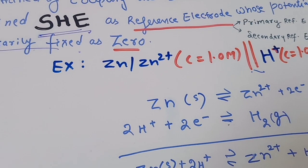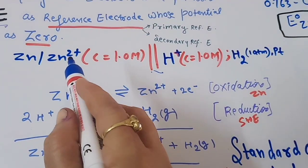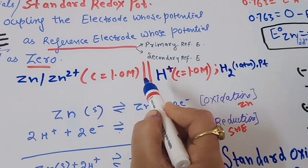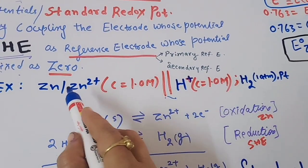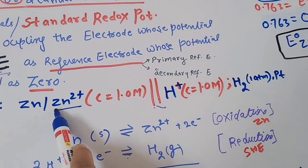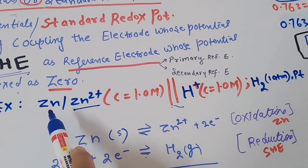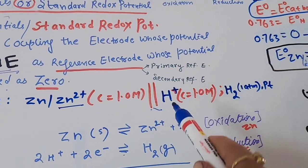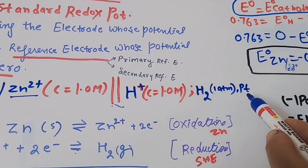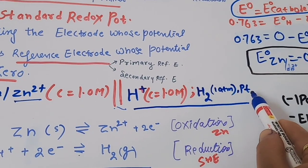If we want to determine the potential of the zinc electrode, we couple it with the standard hydrogen electrode. Using electrode representation — metal in contact with metal ion shown by a vertical line, and a salt bridge shown by two parallel lines — when zinc electrode is coupled with the hydrogen electrode, we write: Zn | Zn²⁺ (1M) ‖ H⁺ (1M) | H₂ (1 atm) | Pt. Zinc is dipped in its own salt solution, and the HCl concentration is 1 molar with H₂ gas at 1 atmospheric pressure.